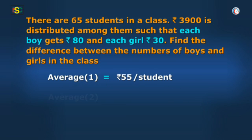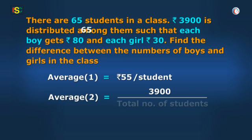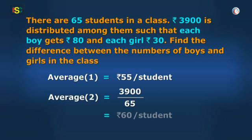But the average money distributed in our question is total money over total number of students, i.e. 3900 over 65, which is equal to 60.